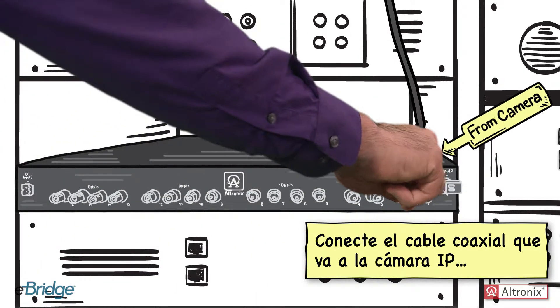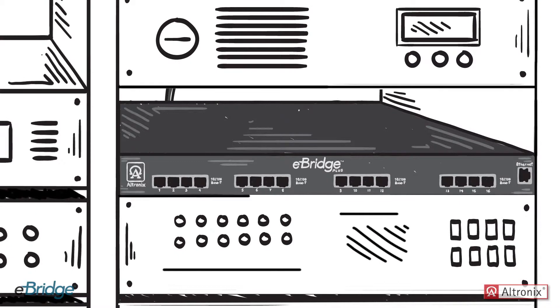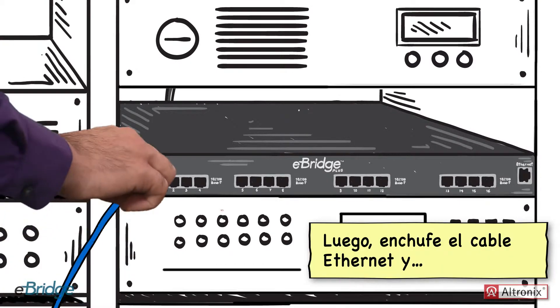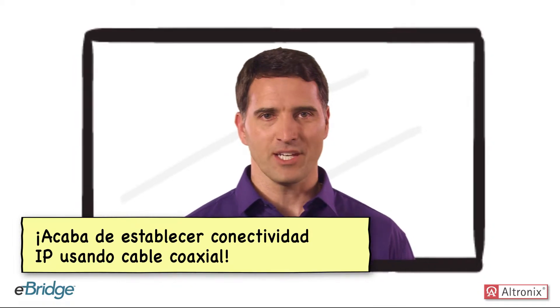Attach the coax cable that runs to the IP camera, then plug in the Ethernet cable. And voila! You've just established IP connectivity using coax.